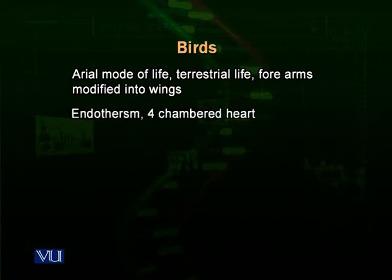Birds also have a four-chambered heart. Their heart is comparatively larger and its four chambers are fully divided, because to continue their flight they need a great deal of energy and oxygen. So their heart is fully divided and larger to compensate for the oxygen supply and nutrient supply needs of the birds.